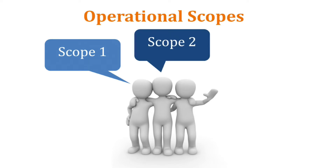Scope two emissions is energy that someone else burns that you purchase. If you think about electricity — a power plant generates and burns it, puts it on a wire, and it comes out of your plug. That is scope two emissions. That's indirect.